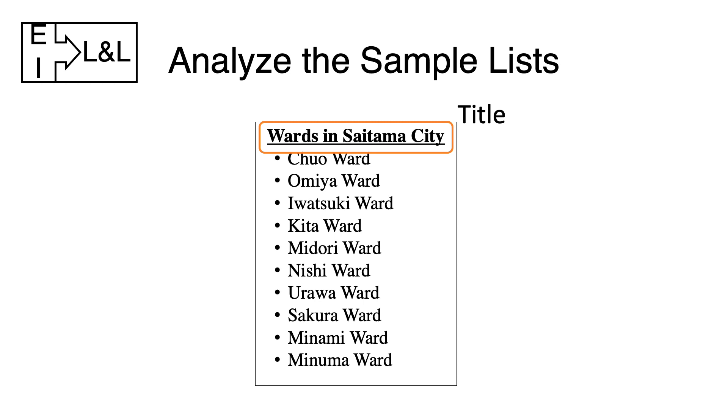Words in Saitama City. The title is bold and underlined. What are words in this list? We can see Chuo ward, Omiya ward, Iwatsuki ward. Yes, there are places in Saitama city. Our school is in Nishi ward. Do you see anything else? Dot marks. Okay, they are called bullets.